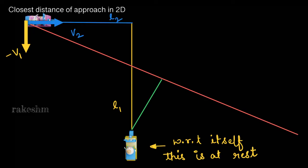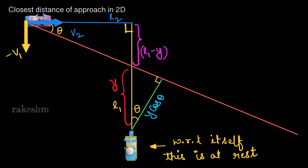To find the closest distance of person 2 relative to person 1, we draw a perpendicular line from person 1 to the path of person 2. This perpendicular length is the shortest distance between the two people. We need to find out what this closest distance is, and we will take this perpendicular distance as y.